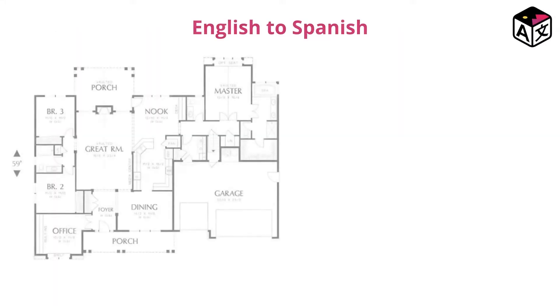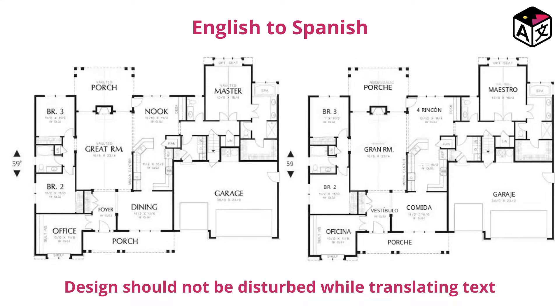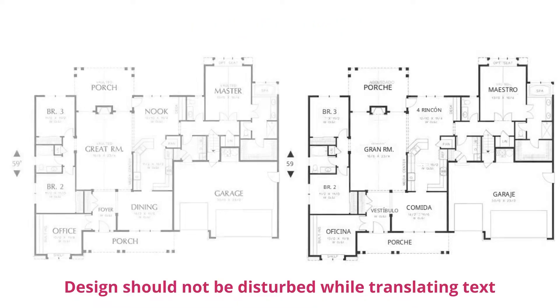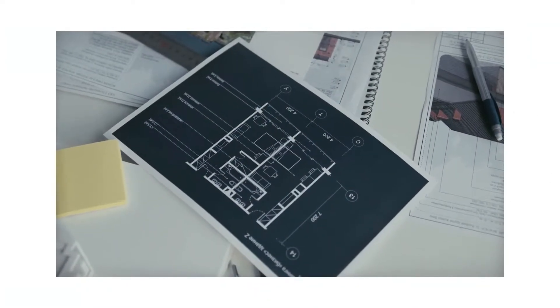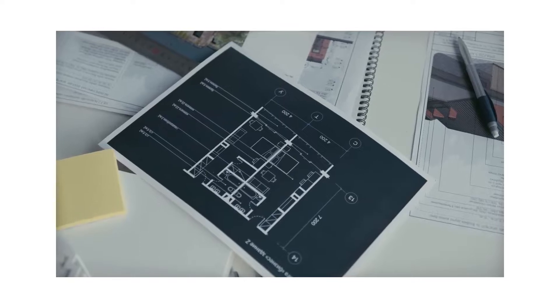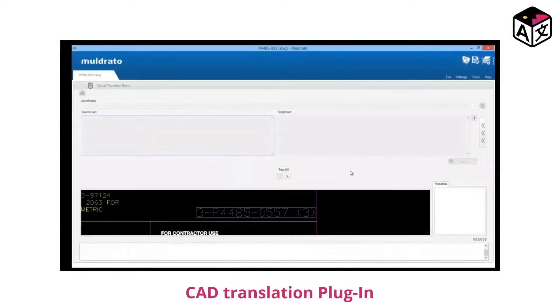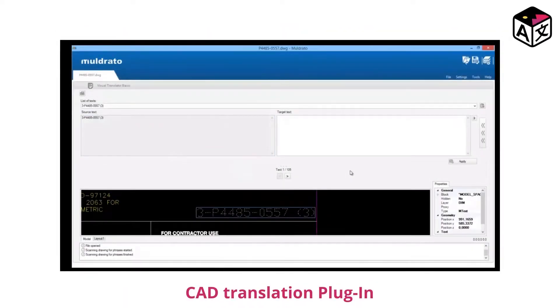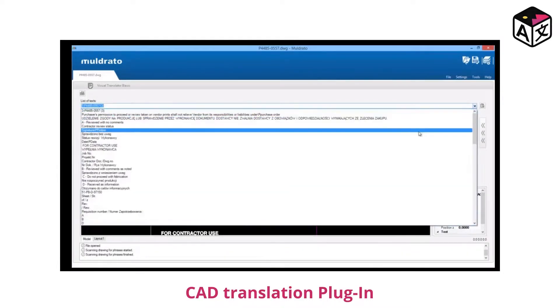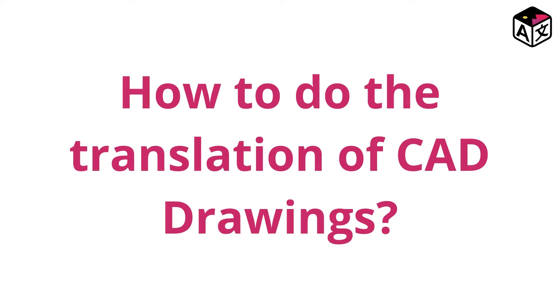To translate CAD drawings is one major challenge because, after the translation of text in the drawings, it is really important that the drawing should look the same as the original one, without disturbing the design. In modern CAD software like AutoCAD and others, there is an inbuilt feature for translating the drawing, or one can easily integrate a plugin that can then translate text into the drawing.